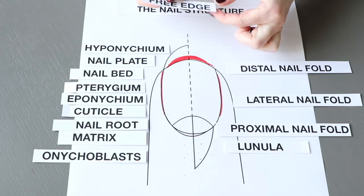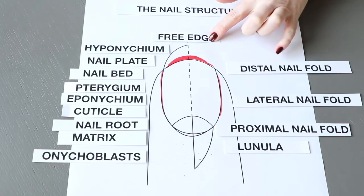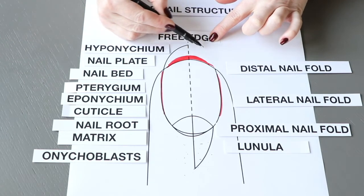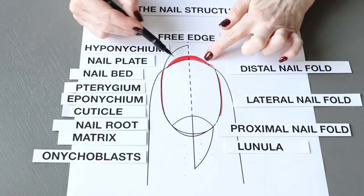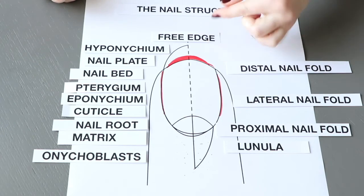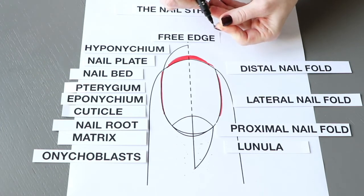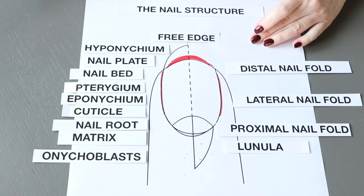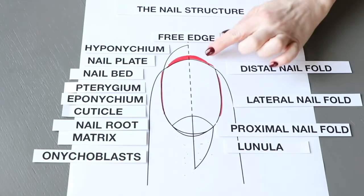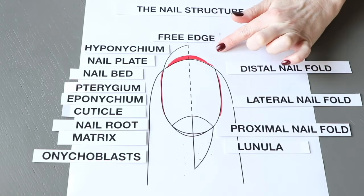The nail grows and moves, and the free edge comes out. The free edge should be cut, and its length depends on the client's preferences. Hyponychium is quite sensitive, therefore we need to be very careful not to push it too hard and to work without sudden movements, so we don't separate hyponychium from the nail plate. The nail end is the cut-off free edge of the nail plate.